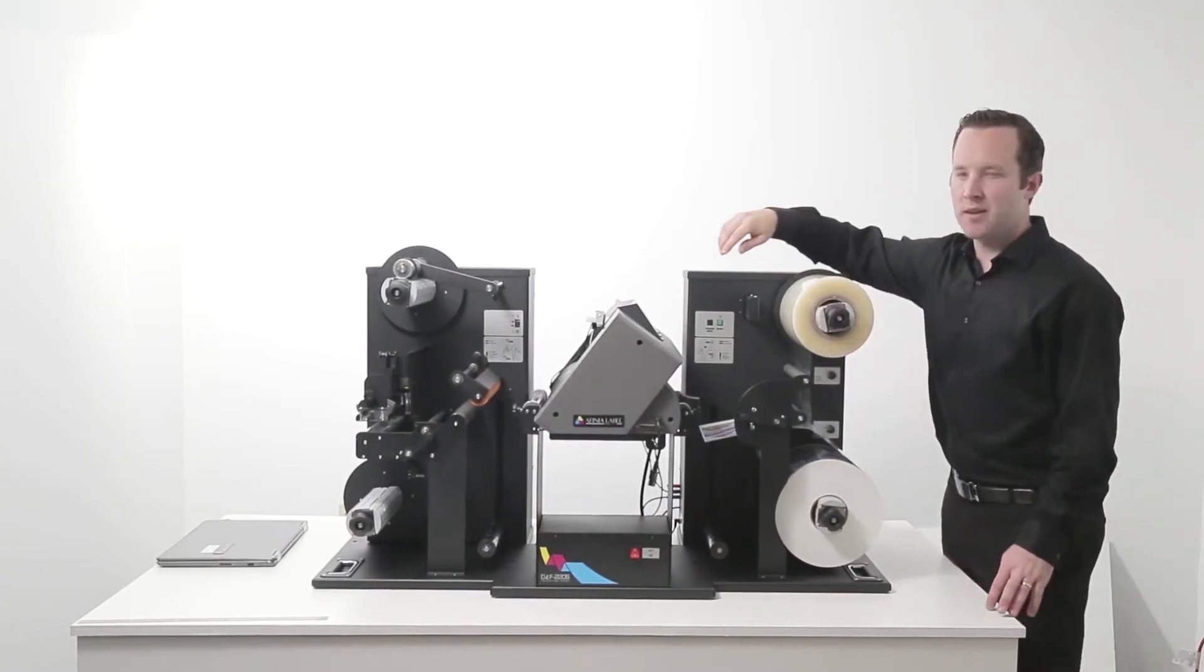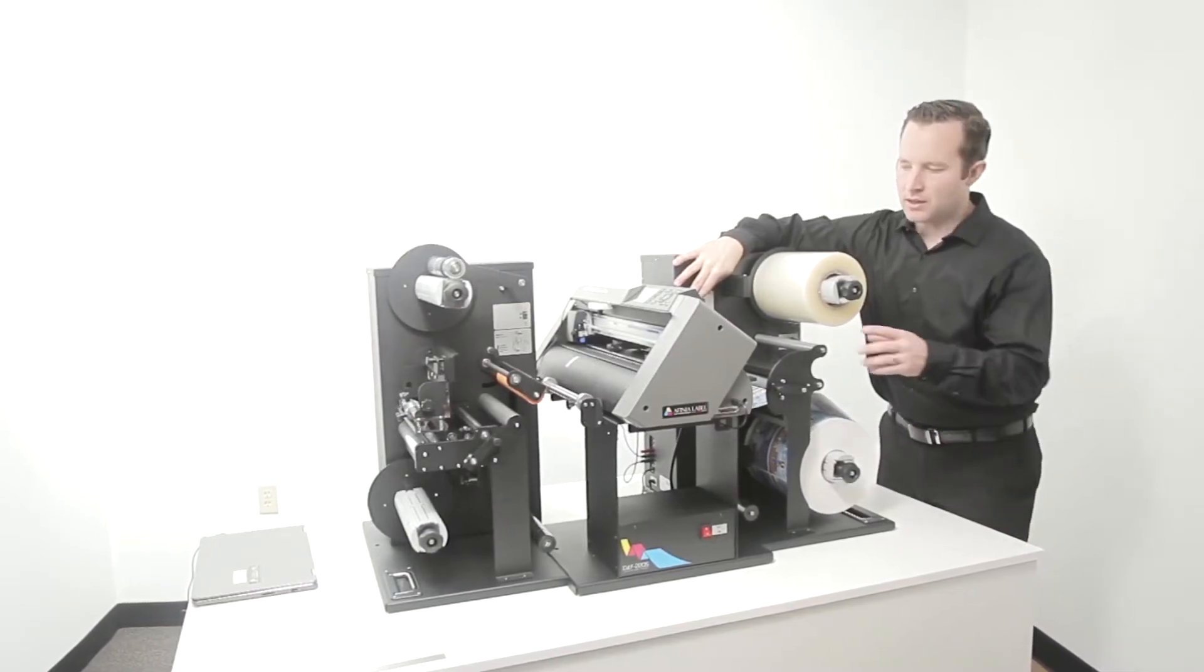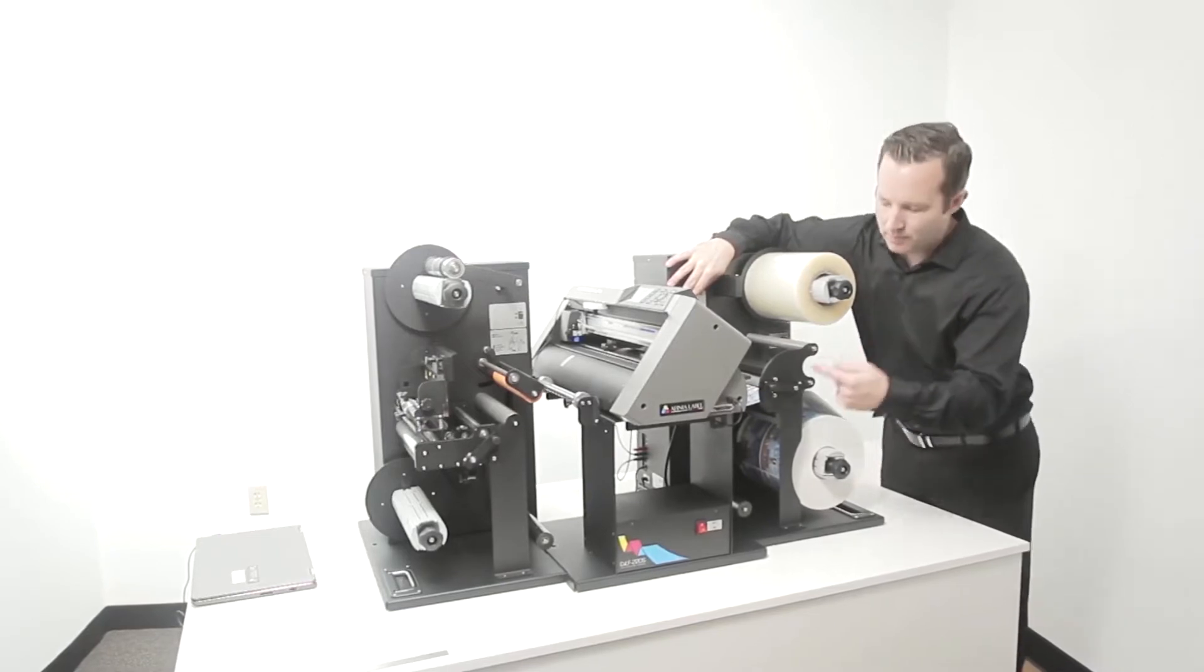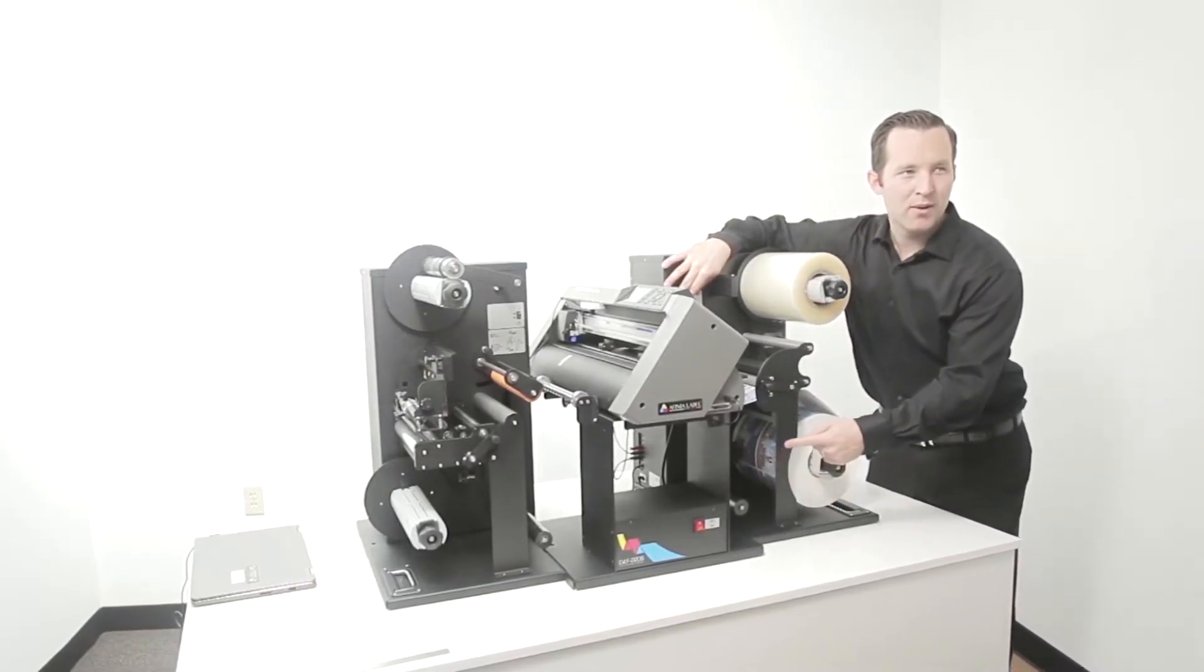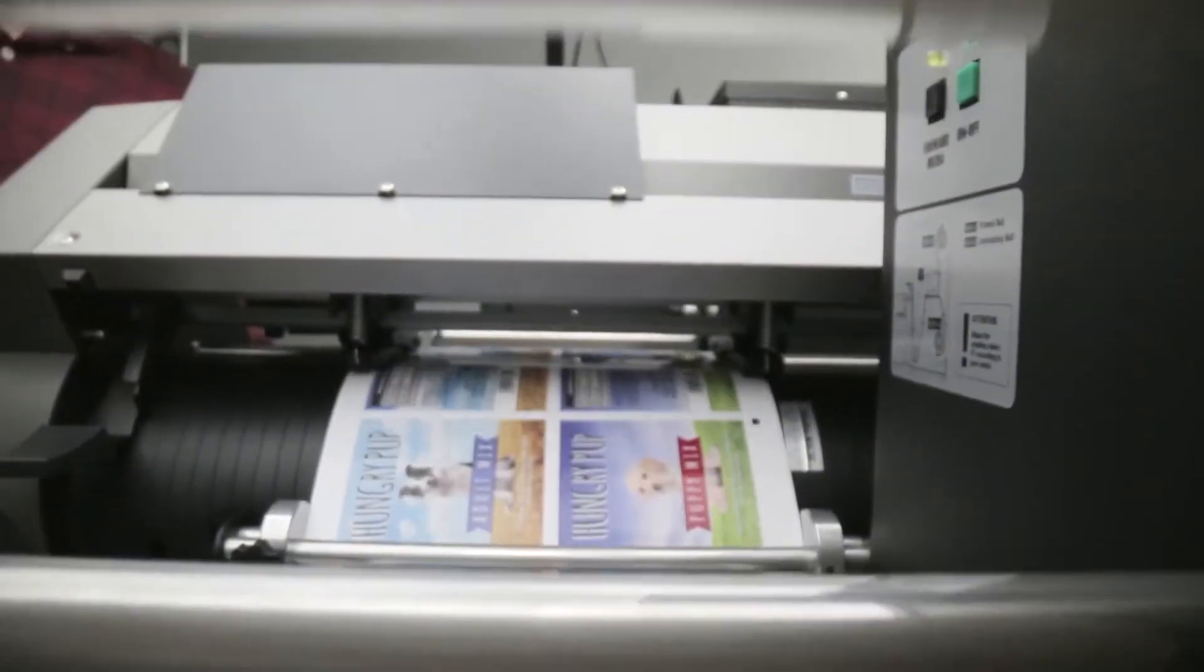Next we'll use the forward media button right here to advance the media far enough to feed into the plotter. We need enough slack to go under the tension arm, through the guides, and all the way through the plotter.